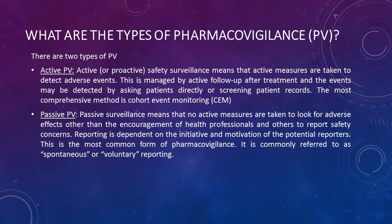What are the types of pharmacovigilance? There are two types. First is active PV: active or proactive safety surveillance means that active measures are taken to detect adverse events. This is managed by active follow-up after treatment, and events may be detected by asking patients directly or screening patient records. The most comprehensive method is cohort event monitoring.